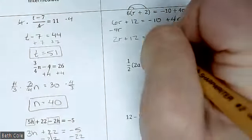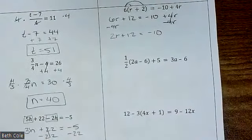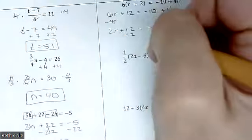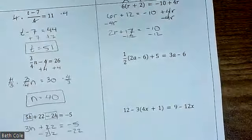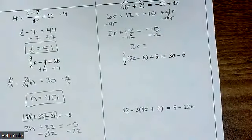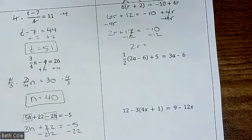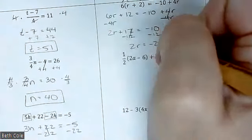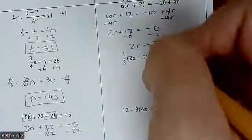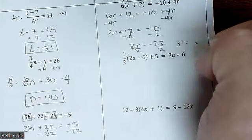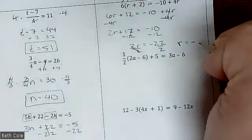That'll give you 2r plus 12 equals negative 10. And then subtract 12 — you're going to have to write small to make it fit. 2r equals negative 10 and negative 12 would be negative 22. Then divide by 2 — r would be negative 11. Good job.